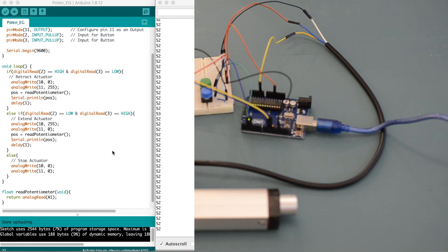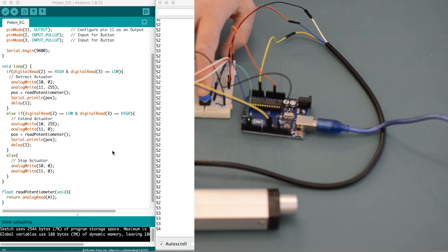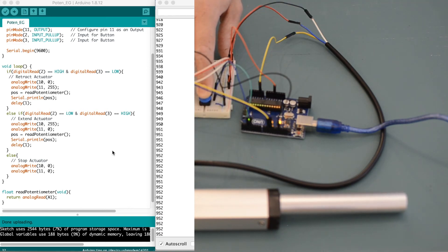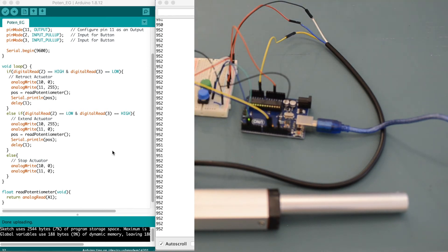You can do this by using the maximum and minimum values that you get from your potentiometer. So you can see here that currently my minimum is at 52-ish and then the maximum is at about 952.